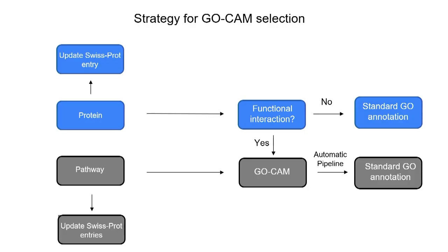We can also curate pathways. For pathways, the flow is a bit different: we start with a review, reading a review of a specific biological process, and we select all the proteins that are part of that pathway. We then look at every single protein of the pathway and update the SwissProt entry. Once we have done that, we do a GoCam — because it is a flow of molecular functions, so for each protein you have to know which molecular function it has in this pathway. It requires extensive literature for each protein. Then the automatic pipeline generates standard GO annotations.